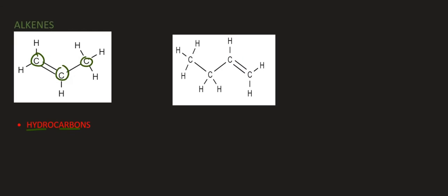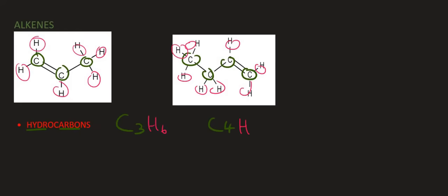Let's look at the general formula now. So if we look at this first one, it's got one, two, three carbons, okay? So I'm going to say C3. Then if you count the hydrogens, there would be six. For the next one, one, two, three, four carbons. And if you count the hydrogens, one, two, three, four, five, six, seven, eight. Okay, so look at the pattern now.